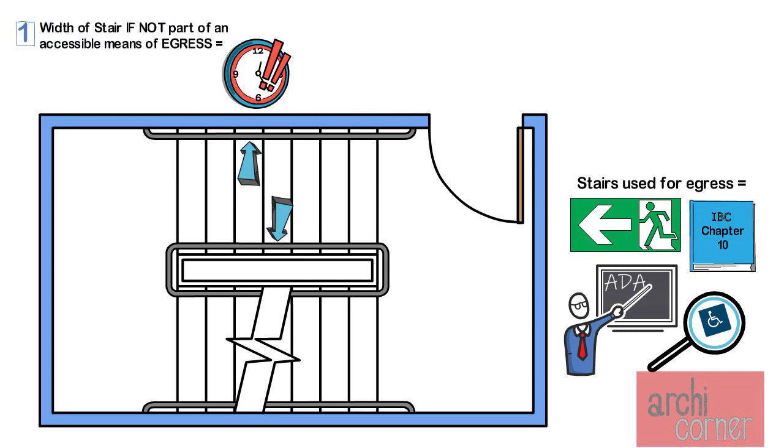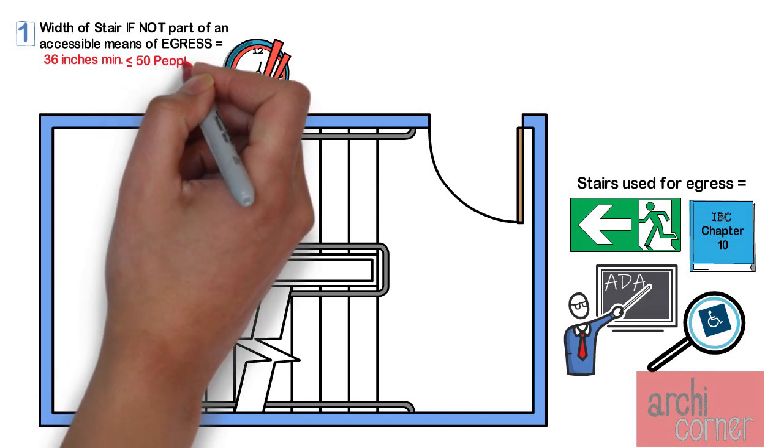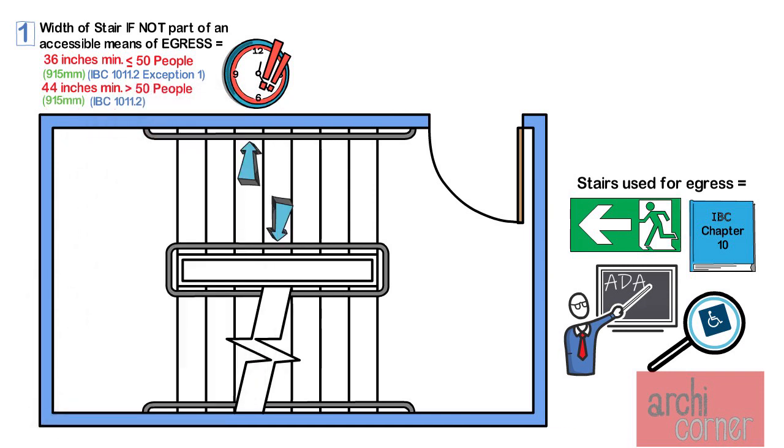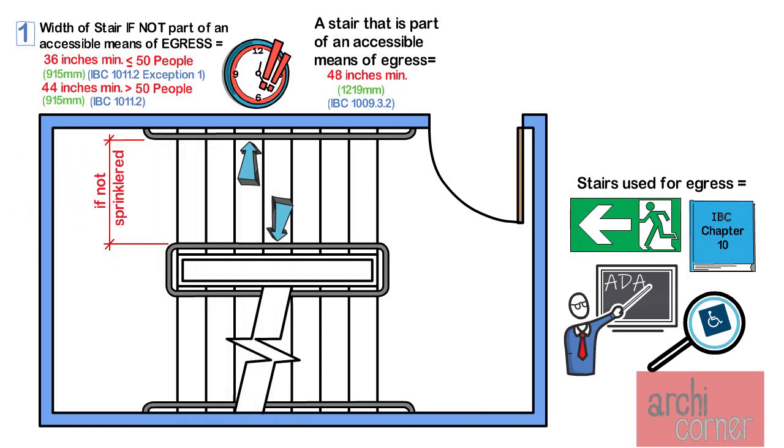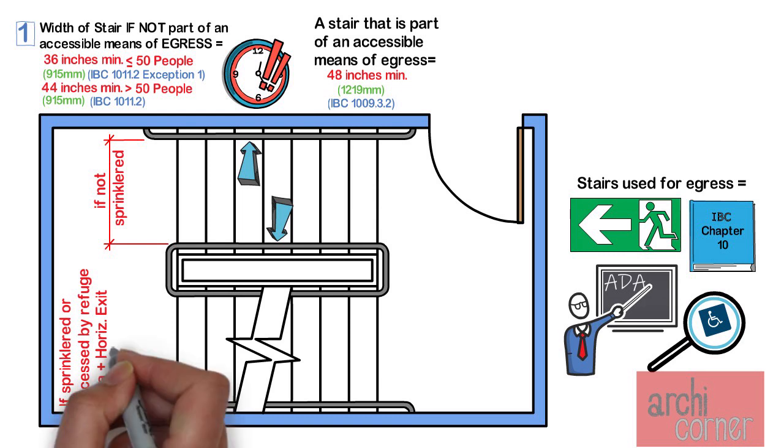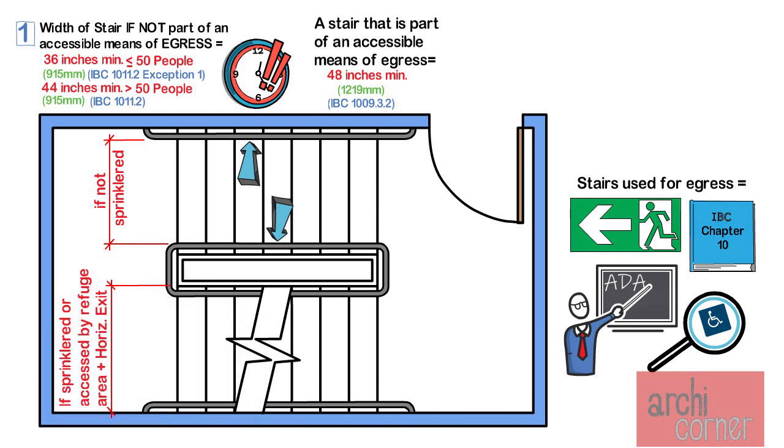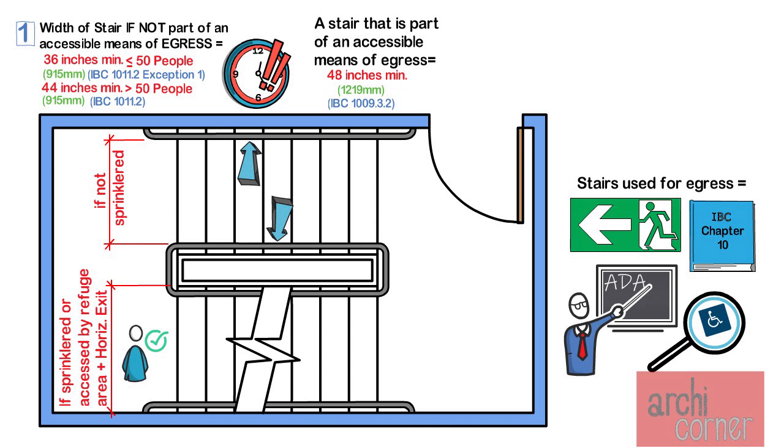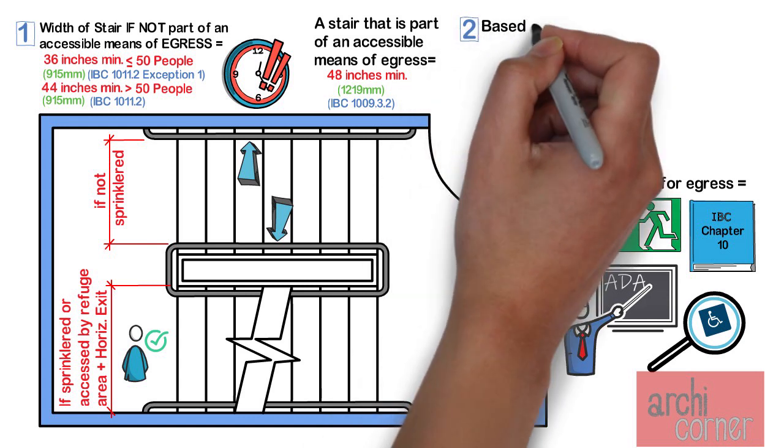Let's first talk about the minimums. If a stair is not part of an accessible means of egress, it can be 36 inches minimum for an occupant load of 50 or less. Otherwise, it must be a minimum of 44 inches. However, in order for a stair to be considered part of an accessible means of egress, a stair must be a minimum width of 48 inches. This measurement can be taken in two ways. If the building is not sprinklered, the measurement is taken between handrails. But if the building is sprinklered throughout with an automatic sprinkler system, or if the stairway is accessed from a refuge area in conjunction with the horizontal exit, then the 48 inches clear can be the clear of the stairs themselves. However, you should always check because 48 inches may not be enough. 48 inches is only a minimum.